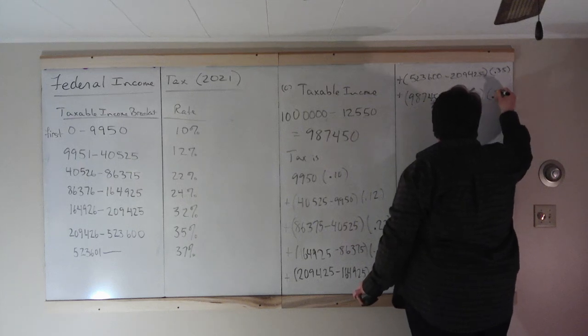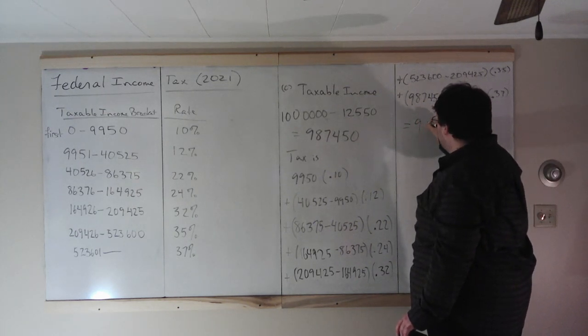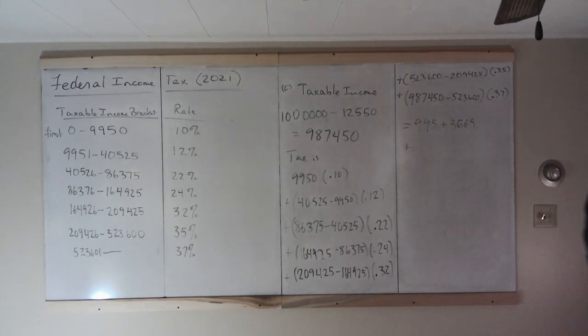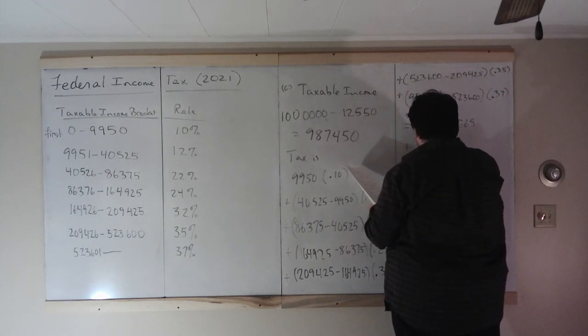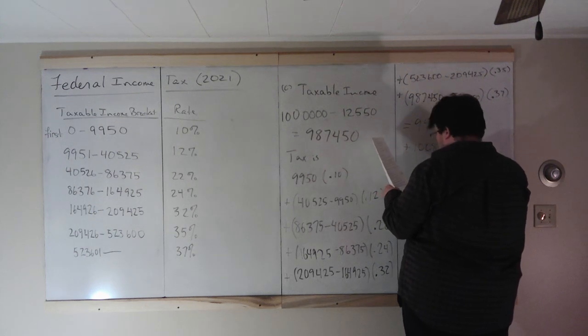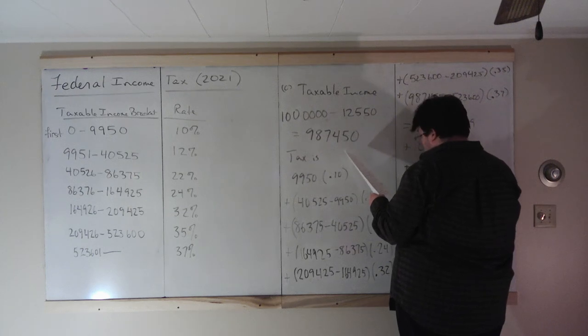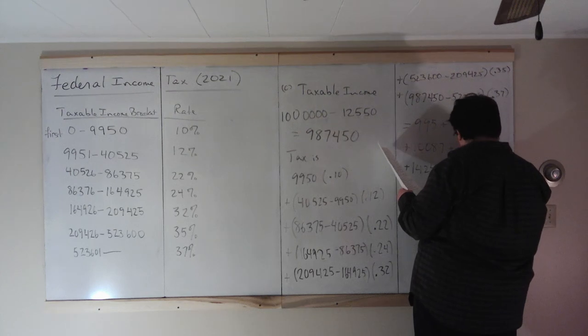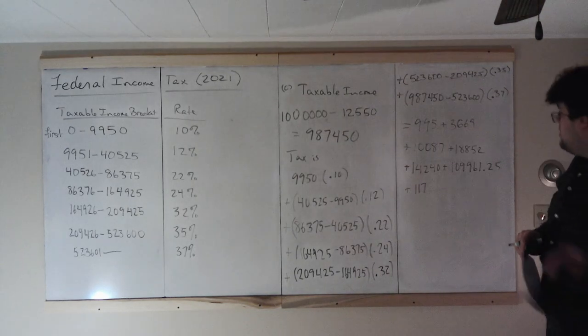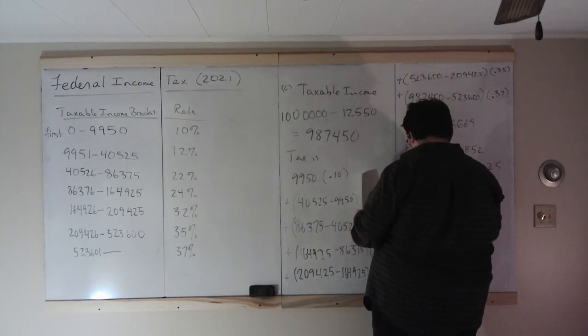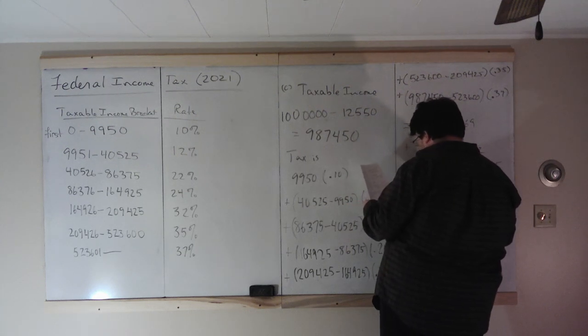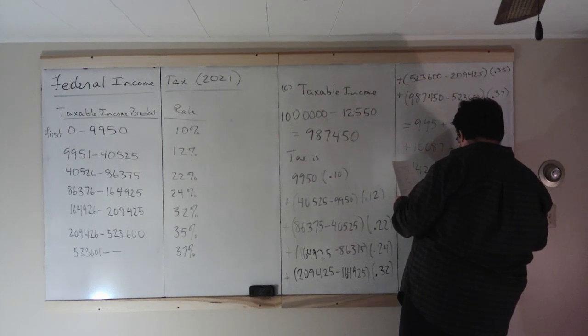So $987,450 minus $523,600 is taxed at 37%. And what does this equal? Well, it equals $995 plus $3,669 plus $10,087 plus $18,852 plus $14,240 plus $109,961.25 plus $171,624.50 and that all equals $329,428.75.